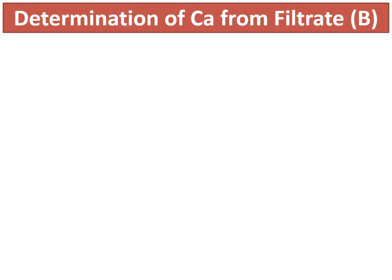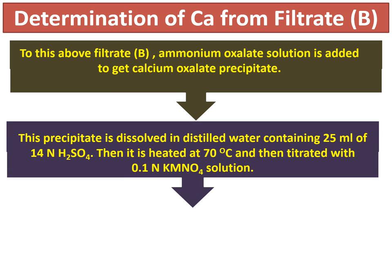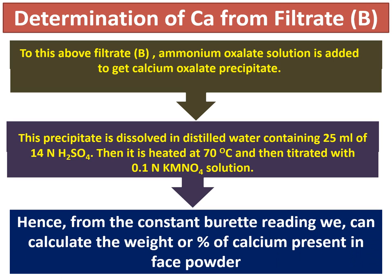Here is the procedure for determination of calcium from Filtrate B. To Filtrate B, ammonium oxalate solution is added to get a calcium oxalate precipitate. This precipitate is dissolved in distilled water containing 25 ml of 1:4 normal H₂SO₄. The solution is heated at 70 degrees centigrade and then titrated with 0.1 normal KMnO₄ solution. From the burette reading of this titration, we can calculate the weight or percentage of calcium present in the face powder.